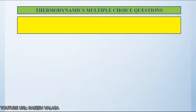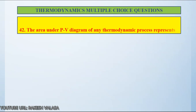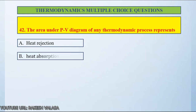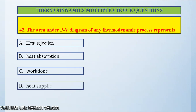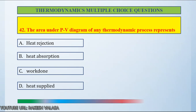Question number 42: The area under the PV diagram of any thermodynamic process represents — Option A: heat rejection, Option B: heat absorption, Option C: work done, Option D: heat supplied. The answer is work done.